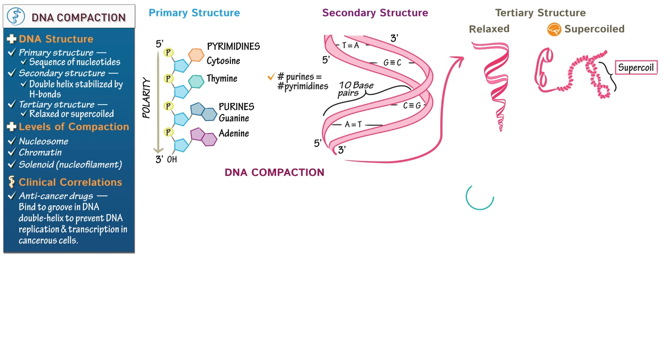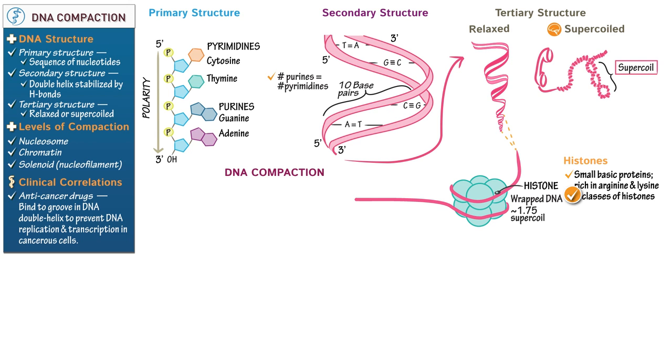To begin, draw a cluster of eight histone proteins. Write that histone proteins are small, basic proteins that are rich in arginine and lysine, and that there are five classes of histone proteins. This octamer contains two copies of four different histones. Show that our double helix wraps around the histone proteins in what is equivalent to approximately 1 and 3 quarters of a supercoil in length.